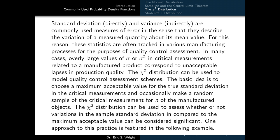Standard deviation and variance are commonly used measures of error, describing the variation of a measured quantity about its mean. These statistics are often tracked in manufacturing processes for quality control assessment — overly large values of standard deviation or variance in critical measurements correspond to unacceptable lapses in production quality. The chi-squared distribution can be used to model quality control assessment schemes, by choosing a maximum acceptable standard deviation and occasionally collecting random samples to assess whether observed variability is significant.